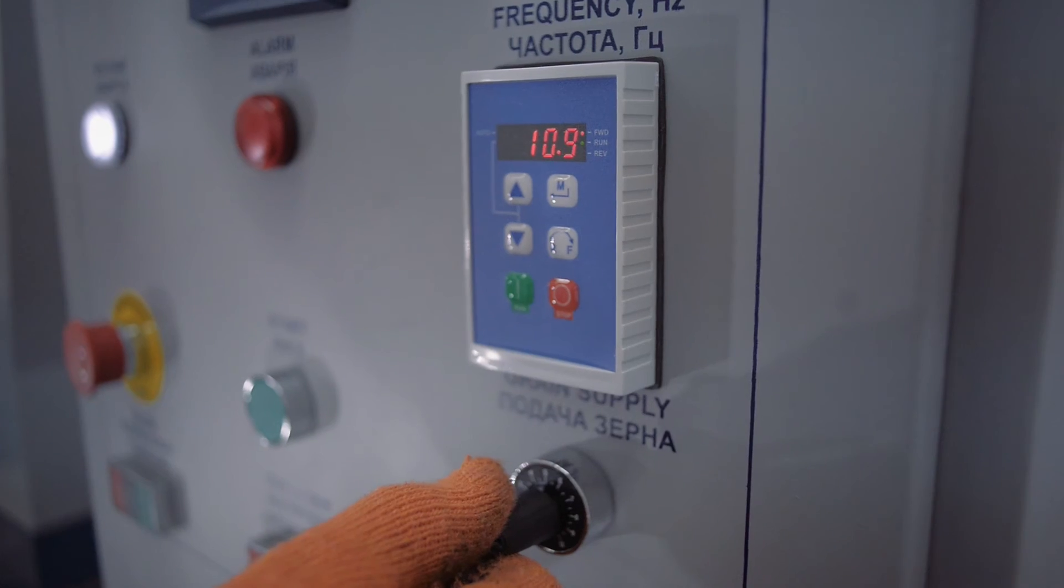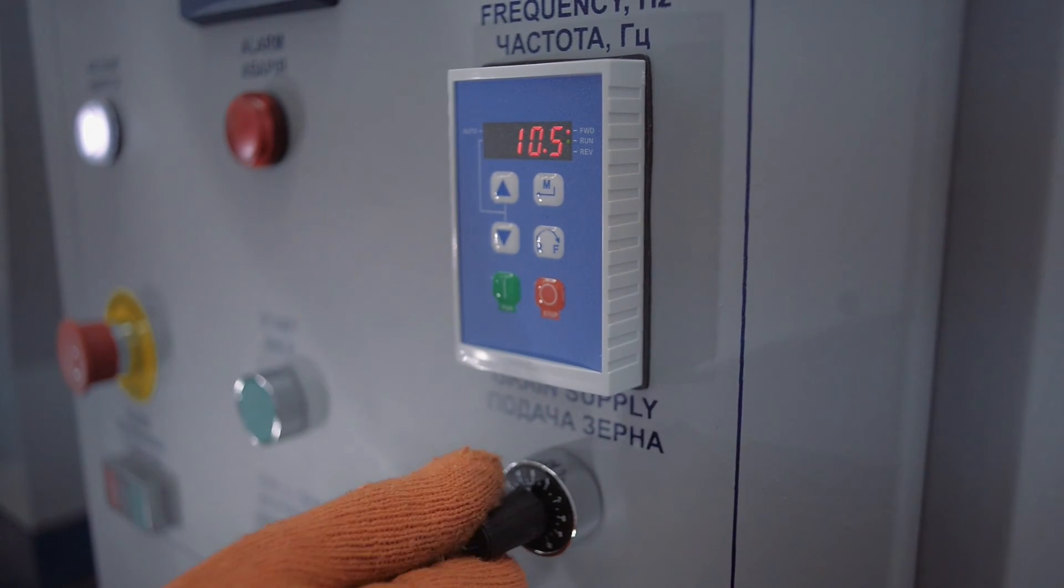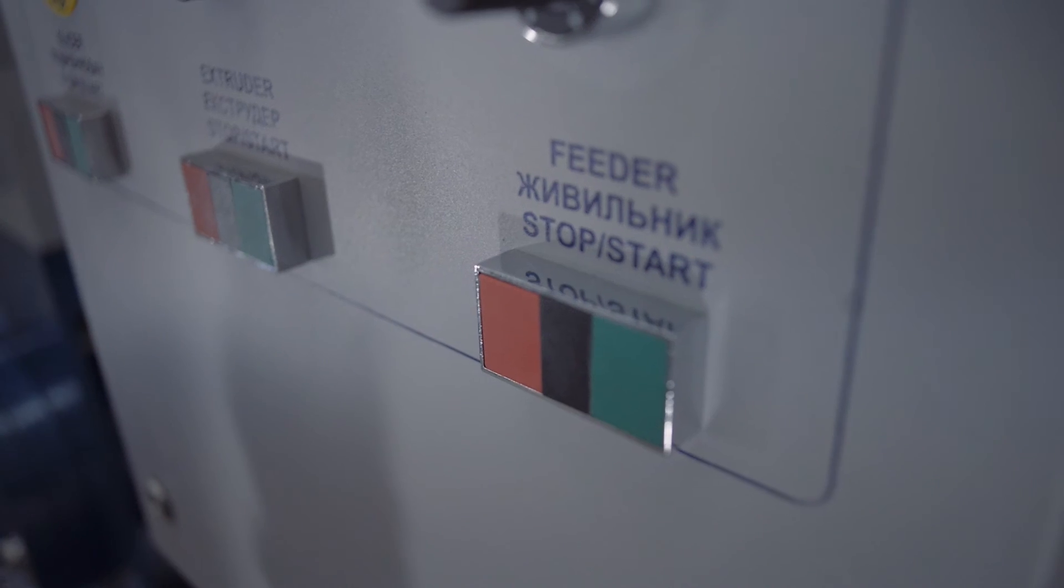How to stop the screw feeder? Stop the product from feeding into the screw feeder. After the residual material has been discharged, stop the machine. Turn off the exhaust ventilation connected to the screw feeder.